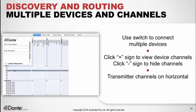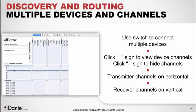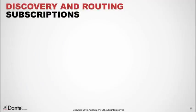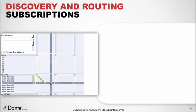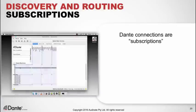The transmitter channels will always appear on the horizontal axis and the receivers on the vertical. Let's send some transmitter channels from one device to another.